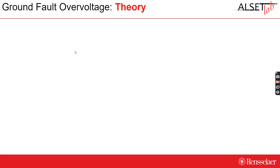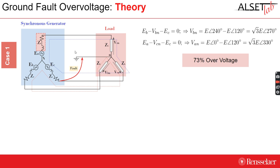For synchronous generators, it is known that whenever a single line-to-ground fault occurs, the voltage level of the unfaulted phases can exhibit an overvoltage of up to 73%. This is theoretically explained in this slide.